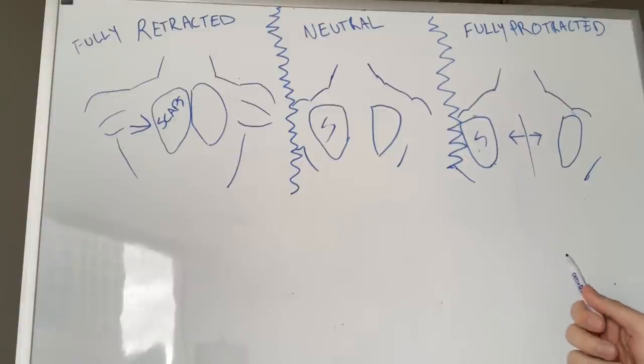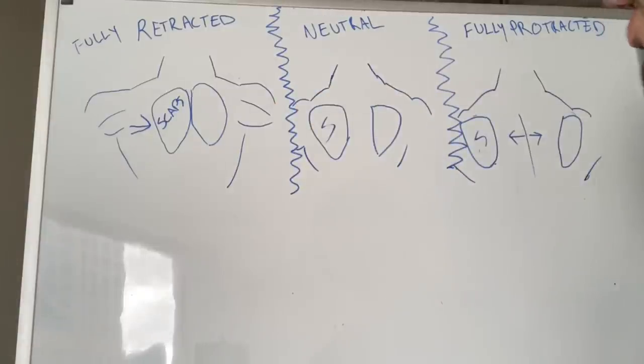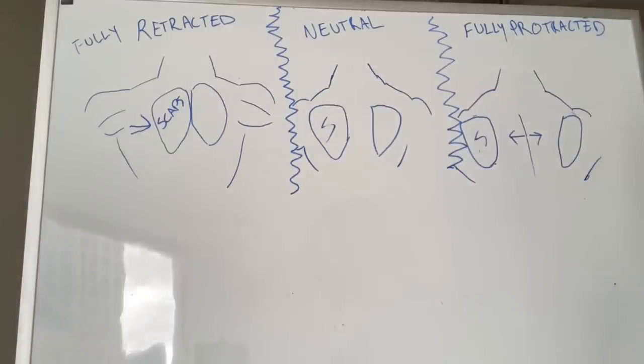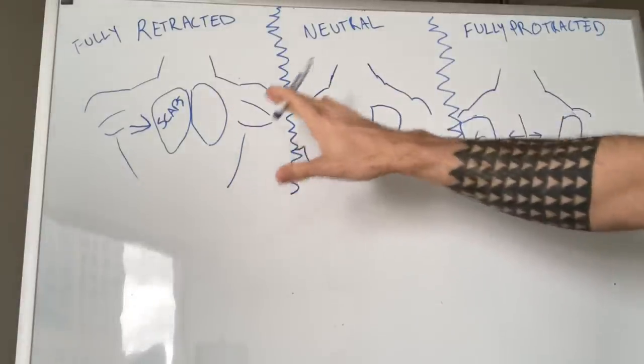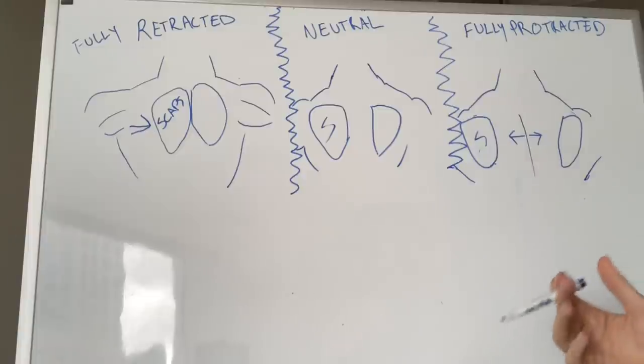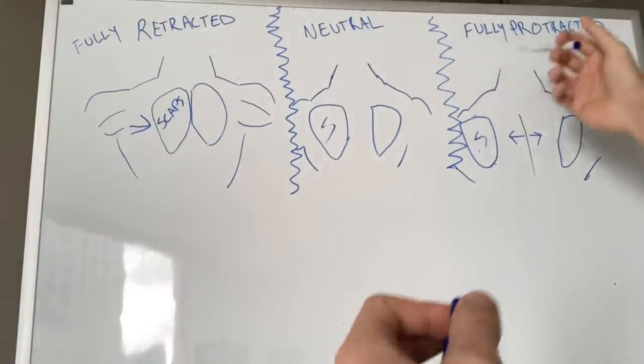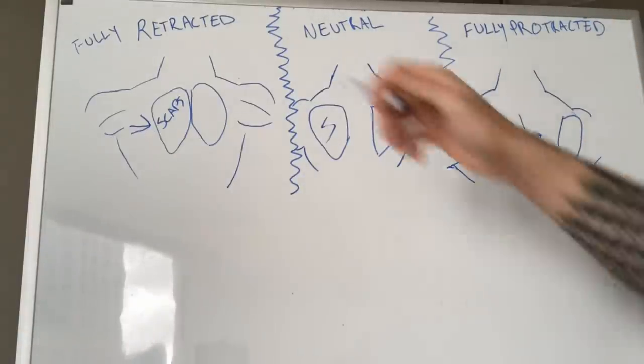So first and foremost, you have to understand what your scapula is. It's these things that are like, I guess you could say Dorito shaped bones in your back that contribute to you being able to roll your shoulders forward and backward. Basically, it's a galaxy brain way of saying you're rolling your shoulders forward. It's protracting.